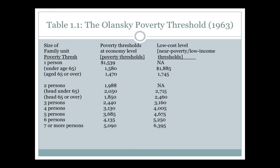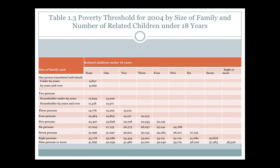The threshold became a little more sophisticated over the years. In 2004, the definition of income was specified more carefully. Money income, according to the Census Bureau, includes earnings, employment compensation, workers' compensation, Social Security, and supplemental security income. There's a handout posted with the lecture that details what constitutes money income.